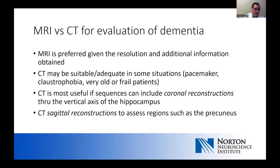That doesn't mean there aren't situations where CT is appropriate — particularly patients with pacemakers, claustrophobia, and very old or frail patients; a CT scan may be perfectly acceptable. If possible, more information can be gathered from CT scans if your radiologist can include coronal reconstructions through the axis of the hippocampus, to get a sense of hippocampal atrophy, and sagittal reconstructions to look at posterior structures, particularly the precuneus.